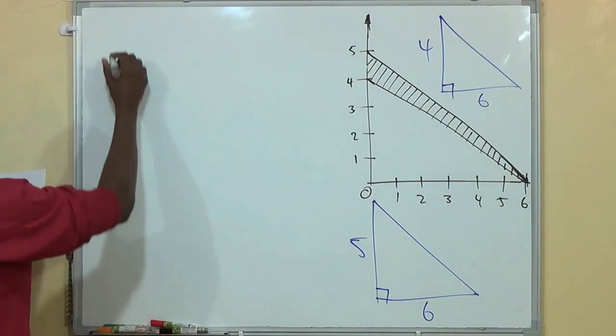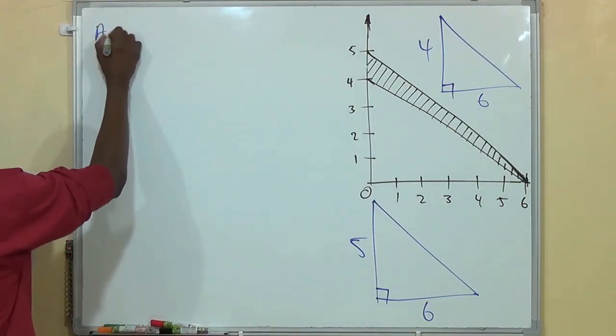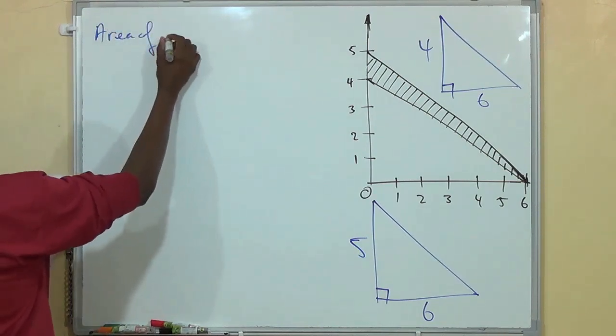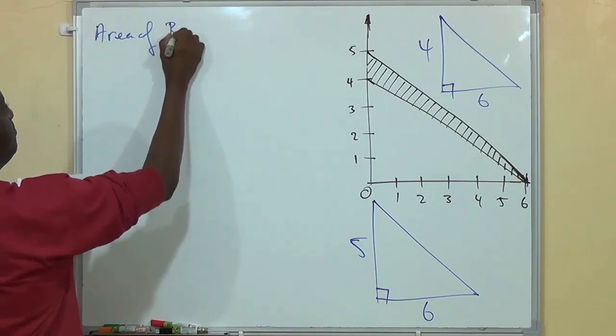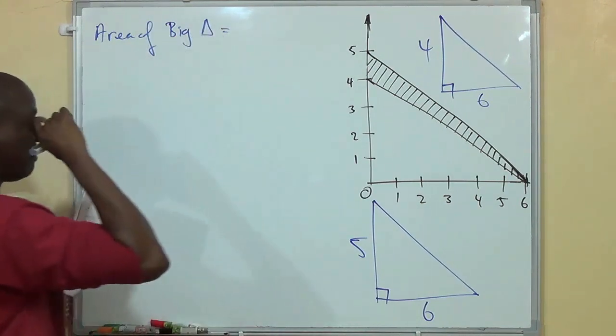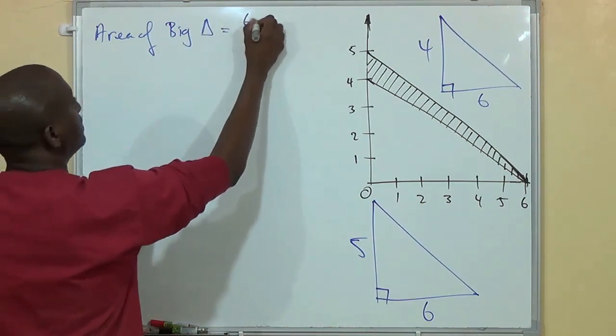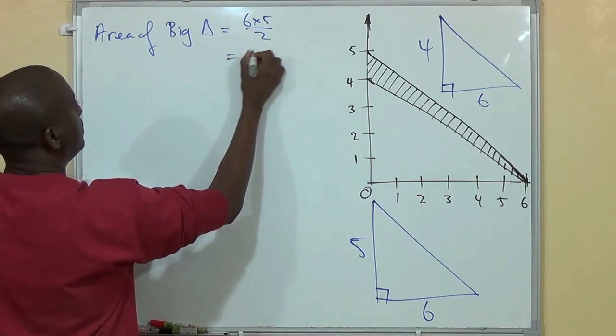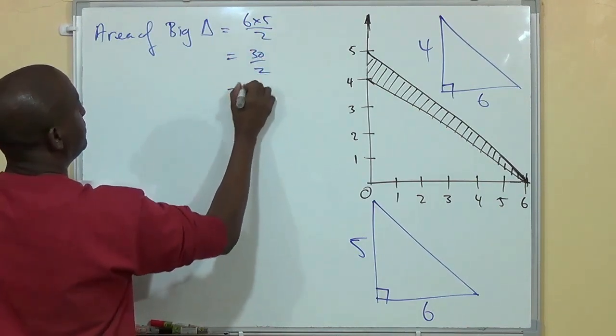So we know that the area of a triangle is - the area of the big triangle is equal to height by base over 2. 6 by 5 over 2 which is 30 over 2 which is 15.